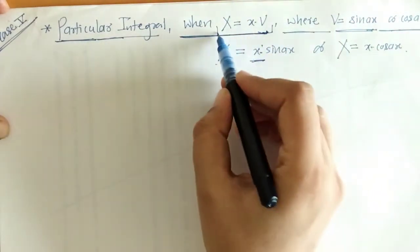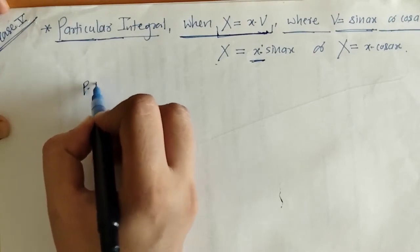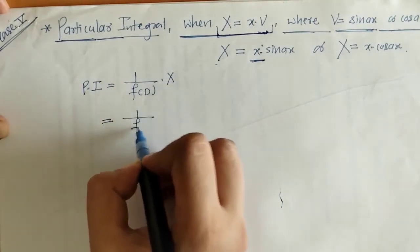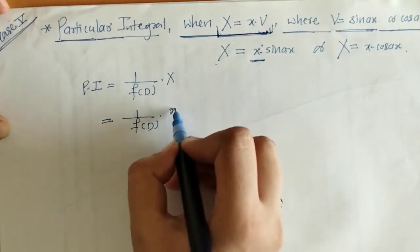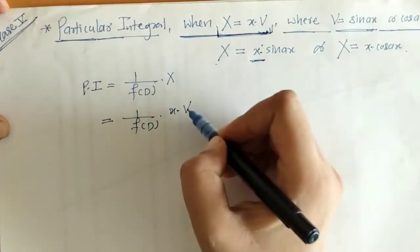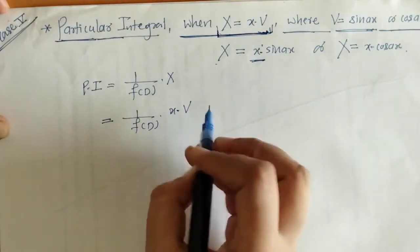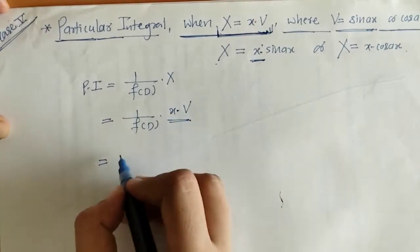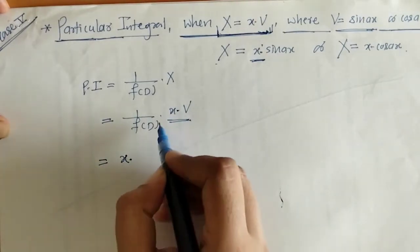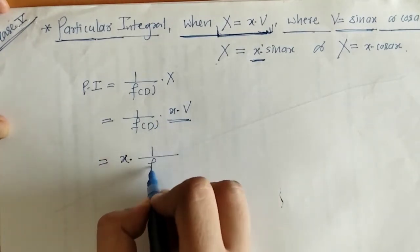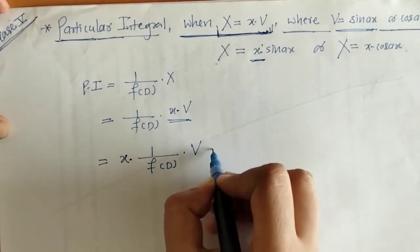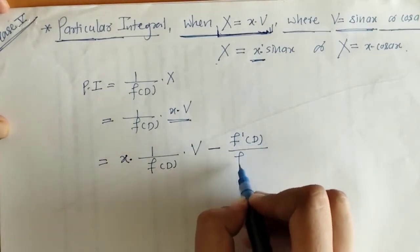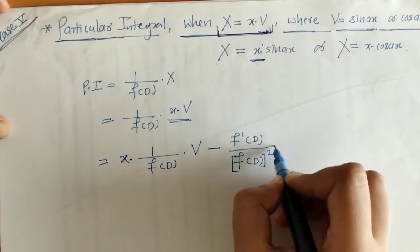Now we have to find PI when we have this type of function. We have the formula: PI = 1/f(D) · X, where X is the function x·v and v is sin(ax) or cos(ax). We operate 1/f(D) on this function by taking x outside the operation, giving x · [1/f(D)·v minus f'(D)/f(D)²·v].